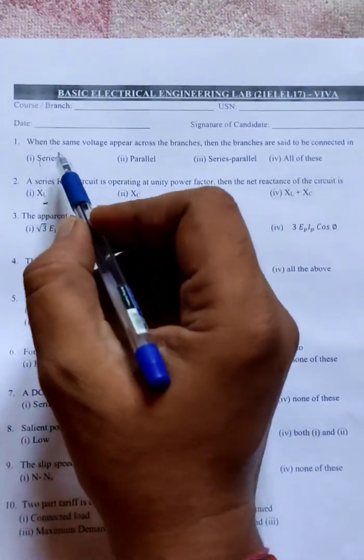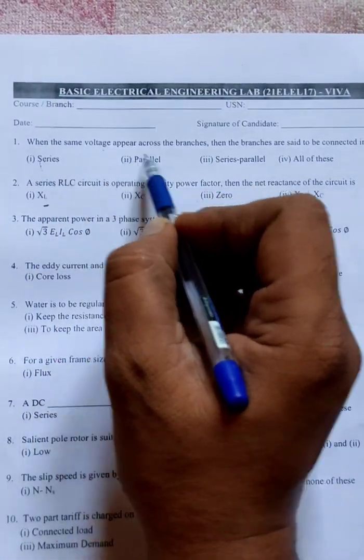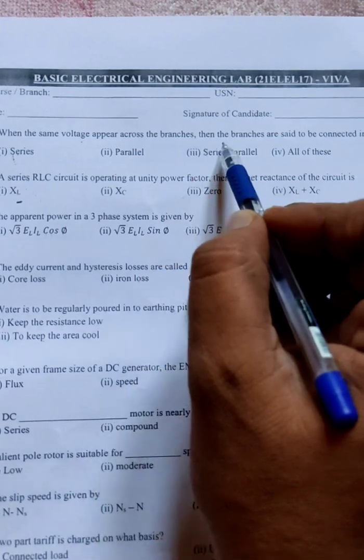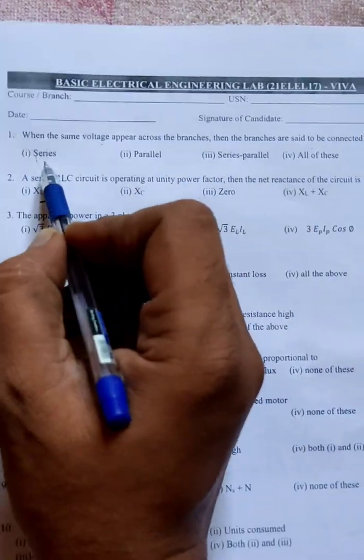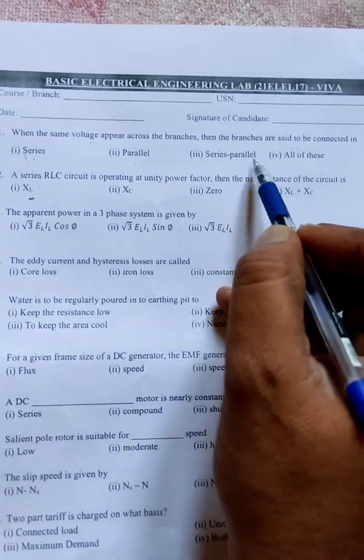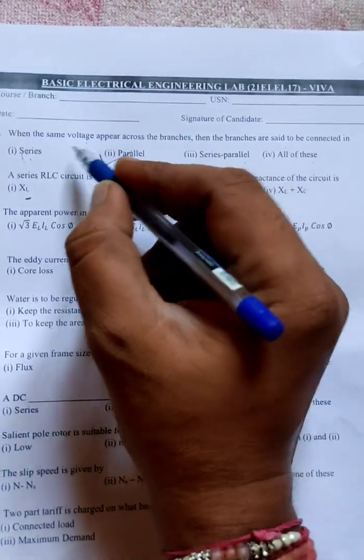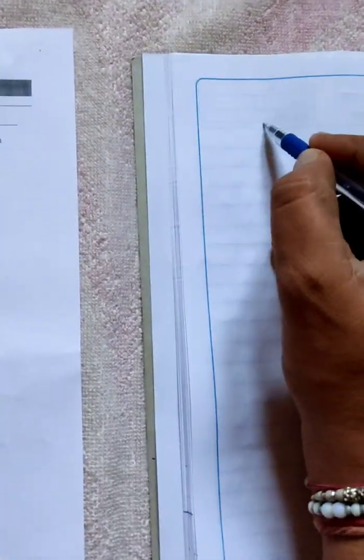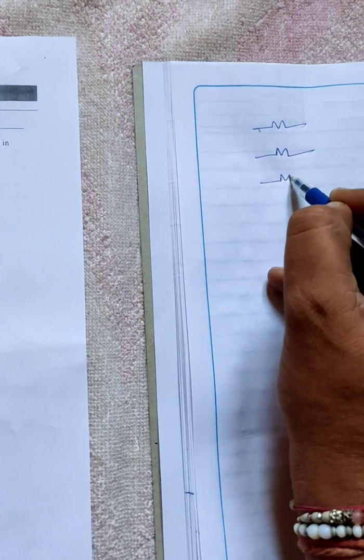Let's start with the first question in this set: When the same voltage appears across the branches, then the branches are set to be connected in series, parallel, series-parallel, or all of these? No, only the second option is correct.